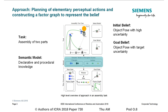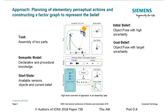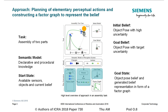Based on the task description and the semantic model, the planning problem is initialized with a start state and a sequence of elementary actions is planned, such that the target uncertainty can be achieved. In order to provide a valid uncertainty estimate, the planned sequence includes the construction of a factor graph as belief representation.